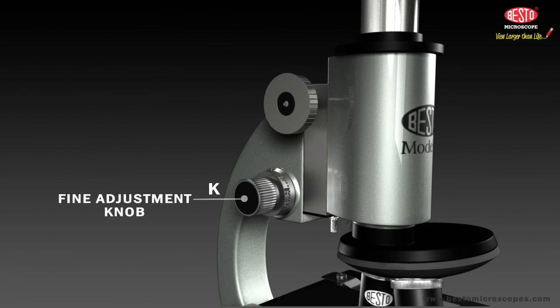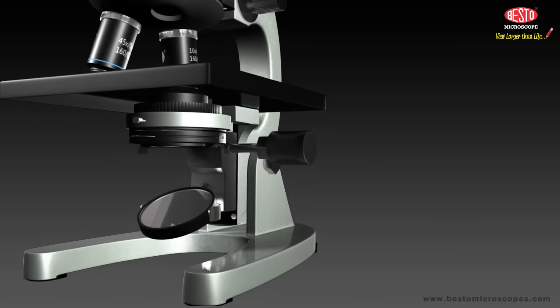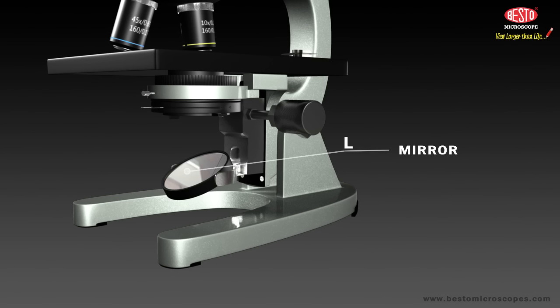Almost all of our Besto microscopes have both coarse and fine adjustment knobs, but some have only one knob. L. The mirror, located beneath the stage diaphragm, increases the amount of light shining through your sample or slide.